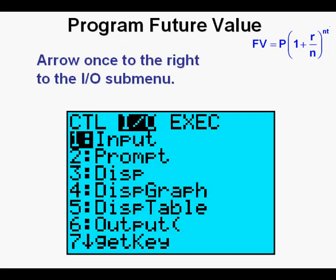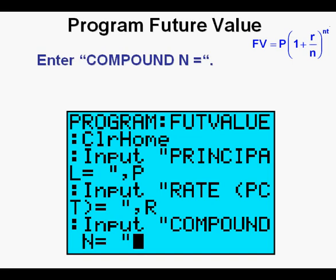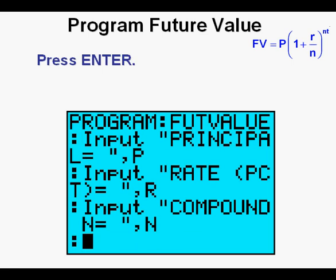Press the program key, arrow once to the right to the input/output submenu, press enter to choose the input option number 1. Enter the string of text inside quotation marks: COMPOUND N= meaning the number of compounding events within a time period. Enter a comma. Enter the letter N by pressing alpha, then the log key with the green N above it. Press enter.